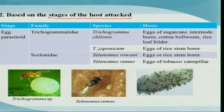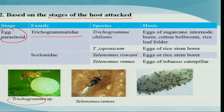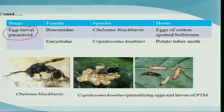Based on the stage of the host attacked, parasitoids may be called egg parasitoids, where they only attack the egg stage — like Trichogramma species, which lay eggs on the host's eggs and complete all development there. Most Trichogramma and Selenida species are egg parasitoids, quite useful because they kill the pest well before it starts causing damage. The second type is egg-larval parasitoid, where eggs are laid on the host egg but the parasitoid continues its life cycle and emerges when the host has reached the larval stage, as seen in some Braconidae and Encyrtidae.